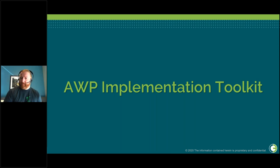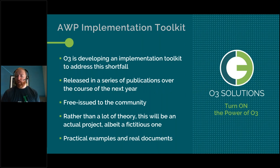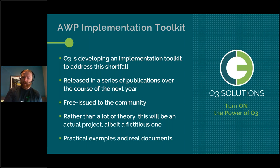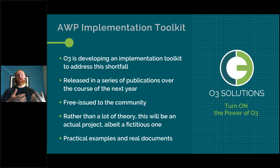The goal is to review O3's plans for an AWP implementation toolkit — a brief reminder for those who attended previous workshops and an outline for newcomers. The aim is to help companies starting their AWP journey understand a systematic, step-by-step approach using a sample project, stepping away from abstraction and theory and using actual models, real-world examples, and project-specific content to make deliverables relatable for project professionals.